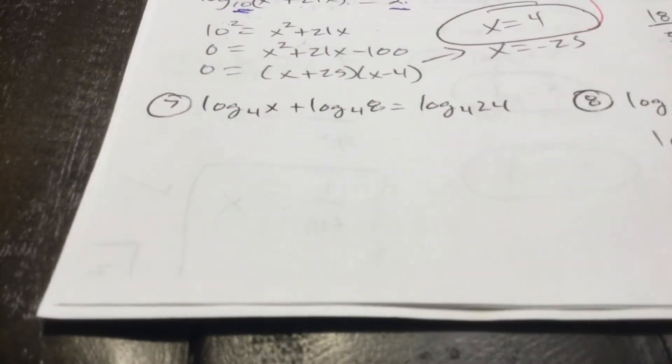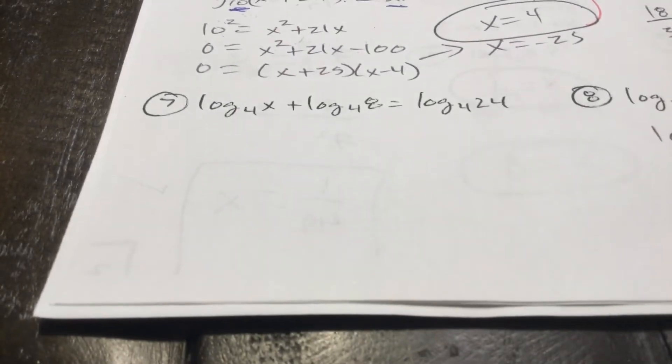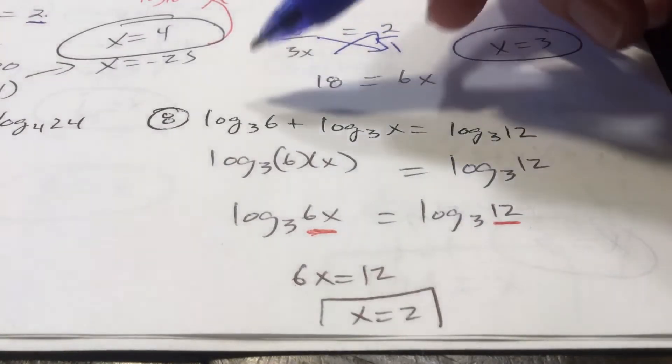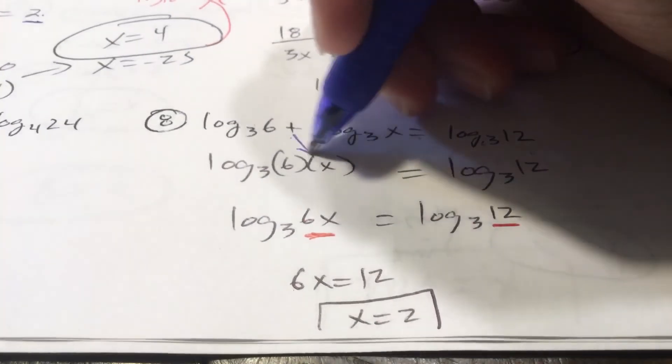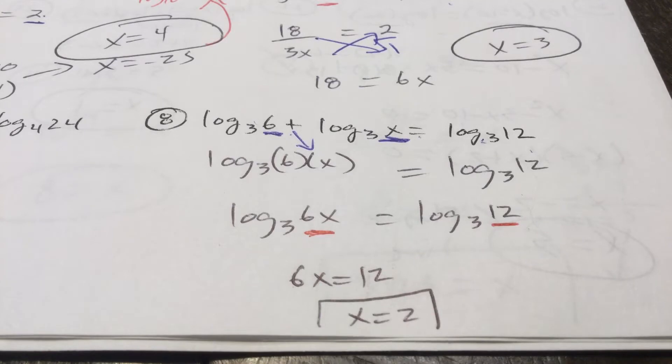Number 7. You guys can do 7. 7 is pretty easy. All right. I believe in, in fact, 7 is just like 8. I would do 8 with you. Then you can definitely do 7. Log base 3. Addition means multiplication in the log world. Log base 3 of 6x equals log base 3 of 12. 6x equals 12. x is 2. All right. All right. That was a relatively challenging page. And we've got more here again. College algebra.